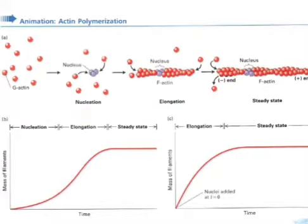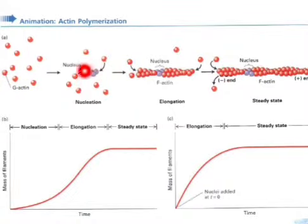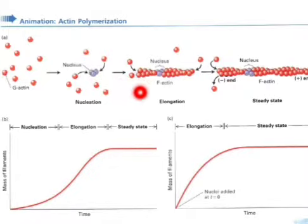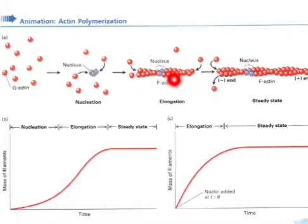As we studied in the earlier lecture, actin has two forms: G-actin (globular actin) and F-actin (fibrous actin). The G-actin monomers come together to form a trimer, which acts as a nucleus. Then more and more G-actin attach at the positive plus end — the barbed end — and the chain elongates. A helical structure is formed as the two strands wind around each other, producing fibrous actin.